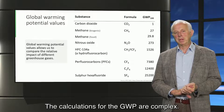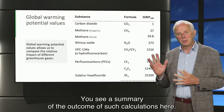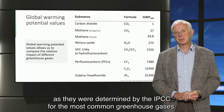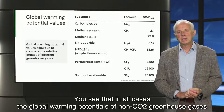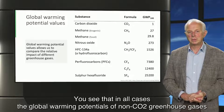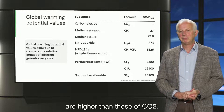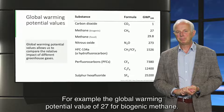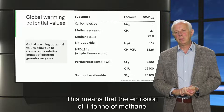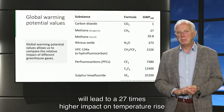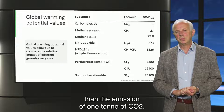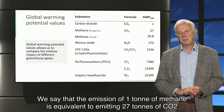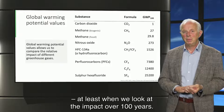The calculations for the GWP are complex. You see a summary of the outcome of such calculations here — these are the global warming potentials as they were determined by the IPCC for the most common greenhouse gases. You see that in all cases, the global warming potentials of non-CO2 greenhouse gases are higher than those of CO2. For example, the global warming potential value of 27 for biogenic methane.